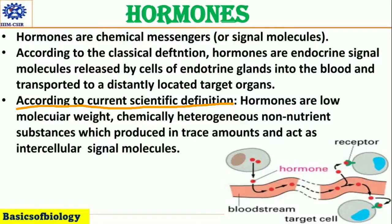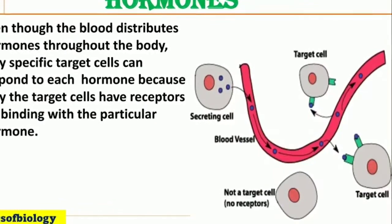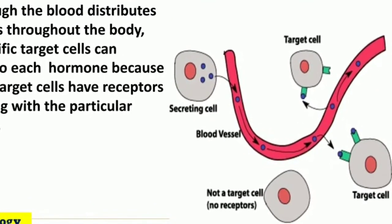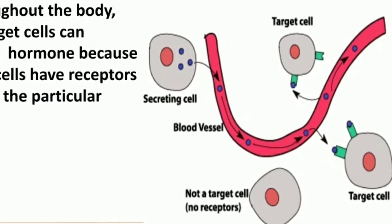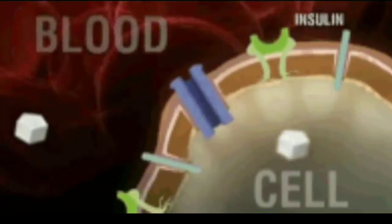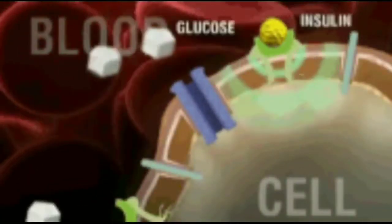According to the current scientific definition, hormones are low molecular weight, chemically heterogeneous, non-nutrient substances which are produced in trace amounts and act as intracellular signal molecules. Even though the blood distributes hormones throughout the body, only specific target cells can respond to each hormone because only those target cells have receptors for binding with that particular hormone.